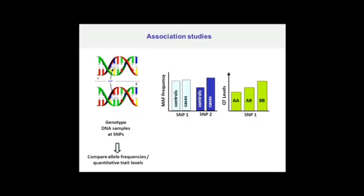So how do we use these to map diseases and find disease genes? You can type individuals for this base change in the DNA and then compare the frequency of these two different types of base in a case-control study — for example, individuals with diabetes as your cases and controls. For some SNPs you see similar frequency in cases and controls, but for others you have an enrichment in the cases, telling you there might be a disease gene for diabetes within that region of the genome. You can use it for quantitative traits too, like cholesterol levels. It all comes down to a statistical test: is the difference in frequency statistically significant?